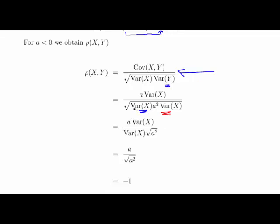So when I have the variance of X times the variance of X, that becomes the variance of X squared. Essentially what I've just done here is I just brought it outside that square root. And that will cancel out now with the term on top. So we have essentially a divided by the square root of a squared.